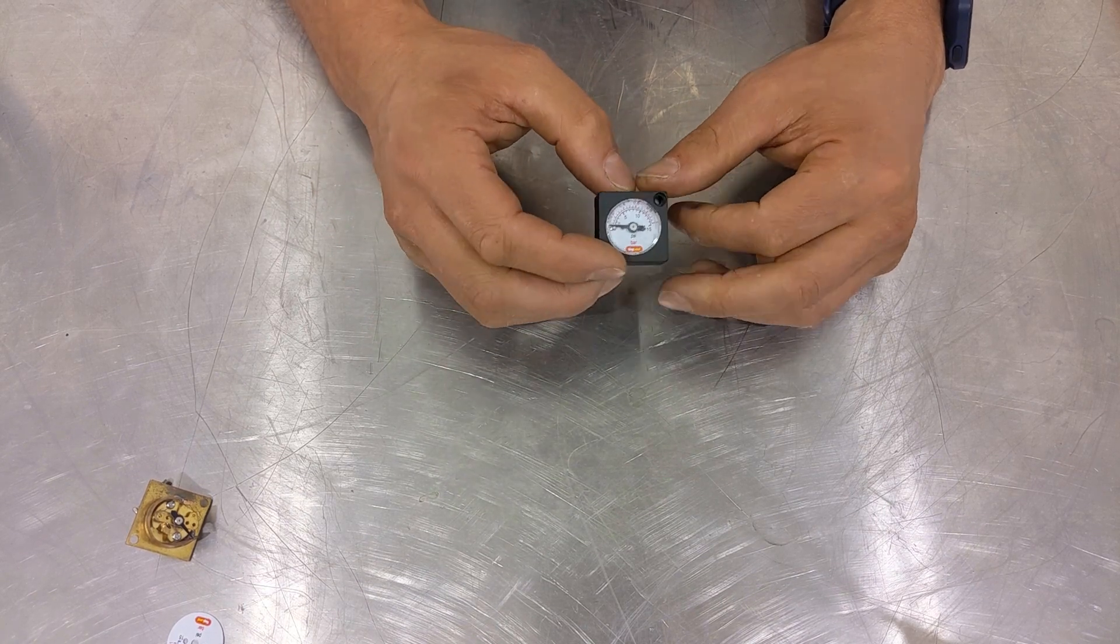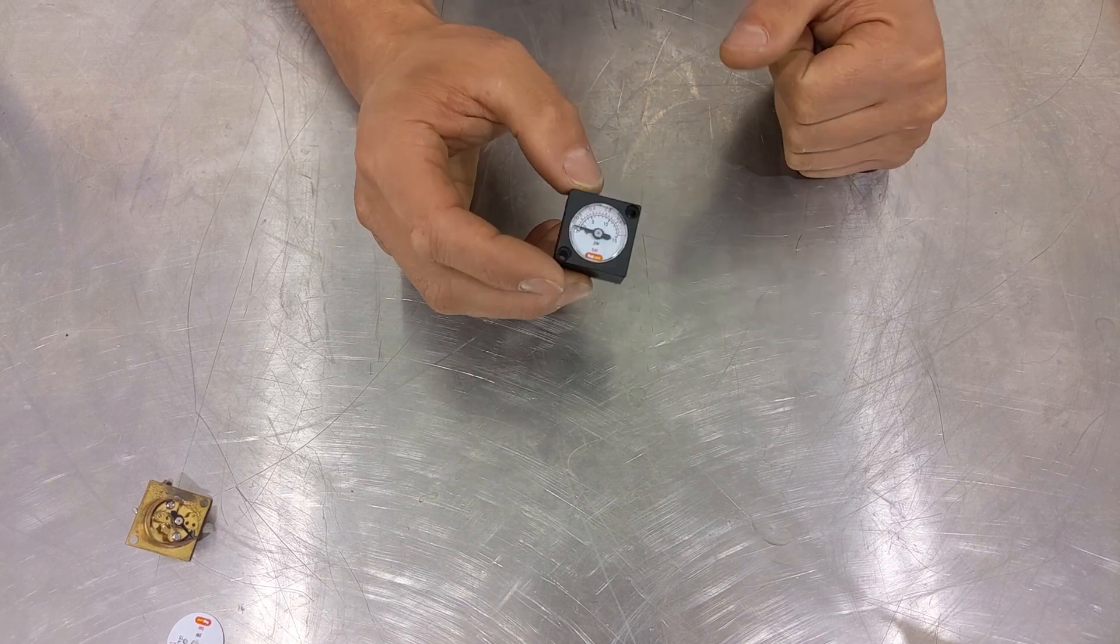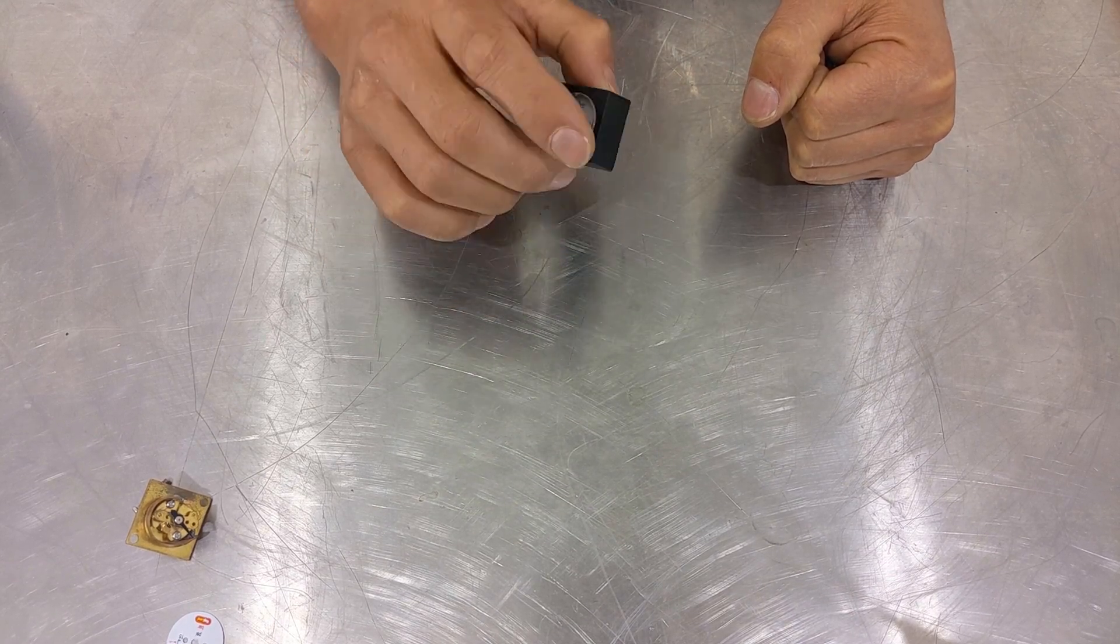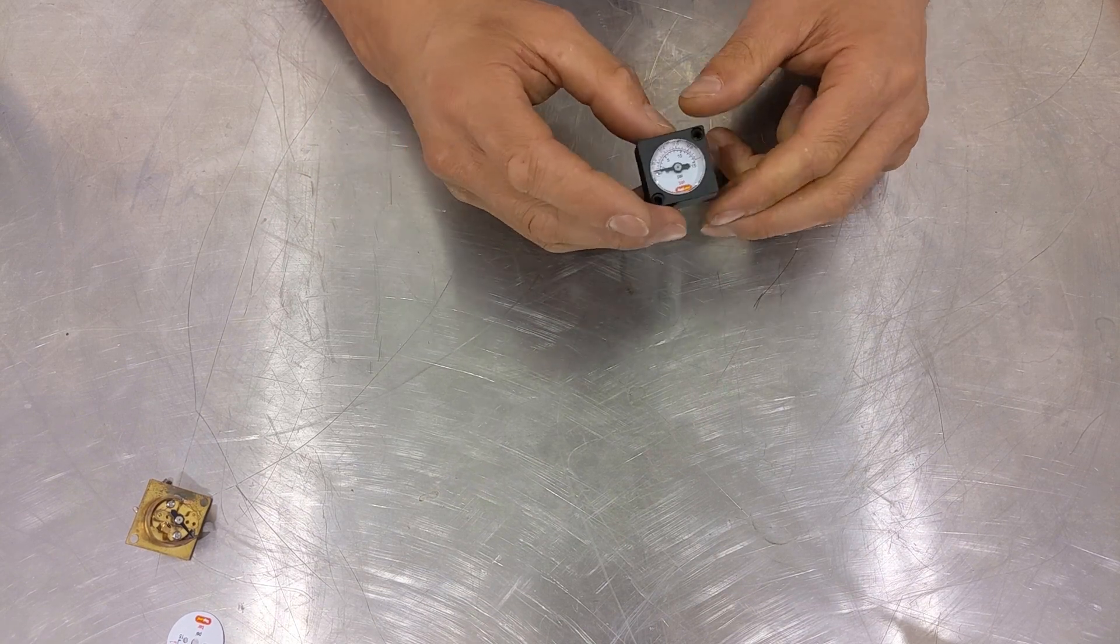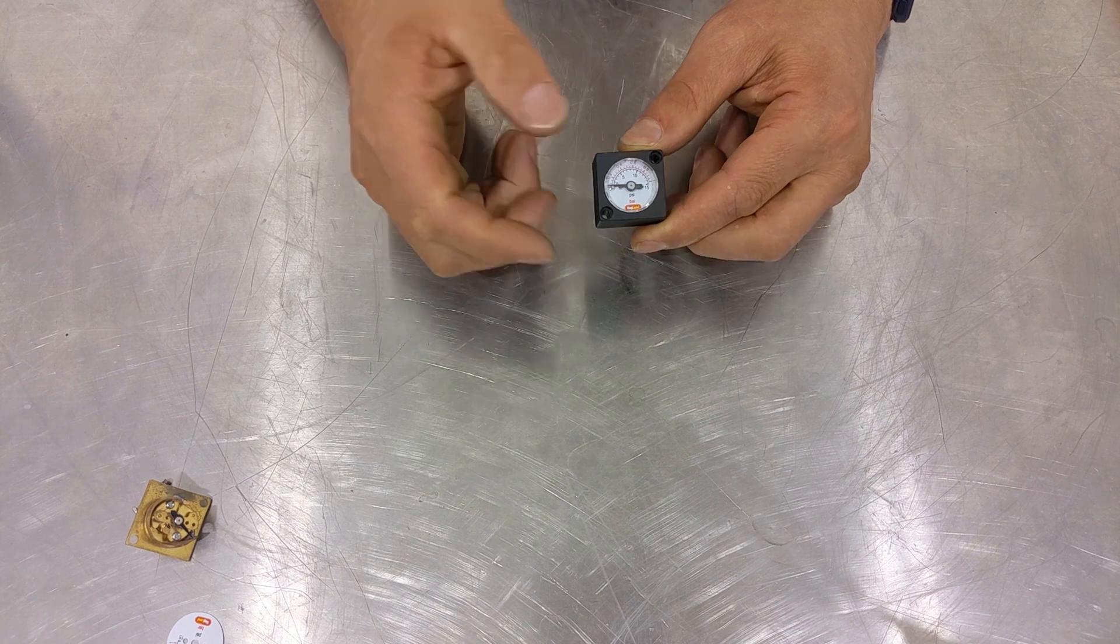The other thing is these small gauges, because they've got such small delicate parts inside, they can be a little bit easy to damage. If you drop them, you'll sometimes be more likely to damage one of these gauges than one of our new digital ones.